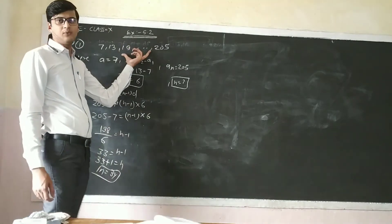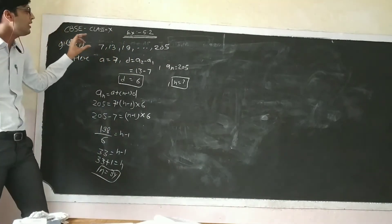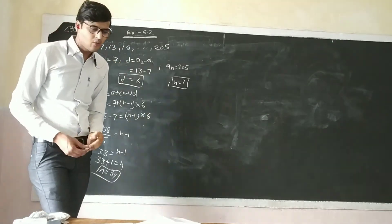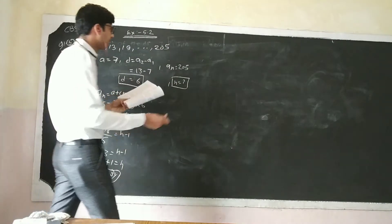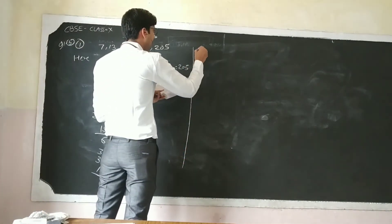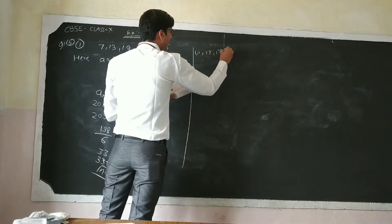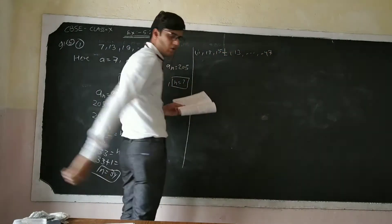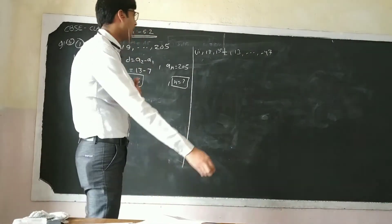So there are 34 terms in this series. The number of terms is 34. Now the second sub-question: the AP is 80, 15 and a half, ..., -47. We need to find the number of terms.